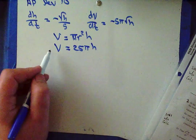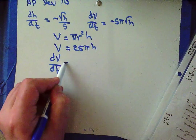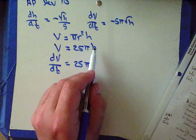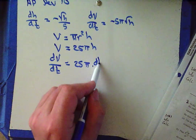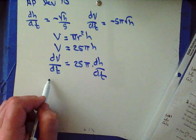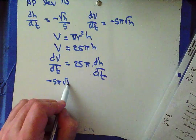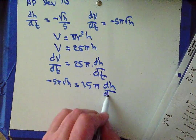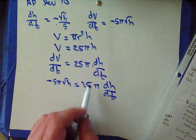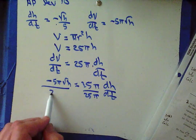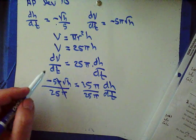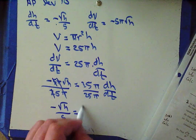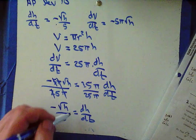Now I take the derivative of both sides with respect to time. I've got dV/dt equals 25π. Don't forget to take the derivative with respect to time, not h — so this is going to be dh/dt. We'll plug in what we know: negative 5π√h equals 25π dh/dt. We're supposed to show that dh/dt equals negative √h over 5, so let's divide by 25π. The π's cancel, the fives cancel, and so we have negative √h over 5 equals dh/dt. There's part a.